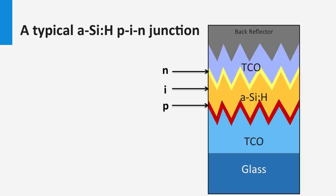A typical solar cell uses the superstrate configuration. When people talk about p-i-n junctions they refer to the sequence in which the silicon layers were deposited: first the p-layer, then the i-layer, then the n-layer. The front contact is a transparent conductive oxide, abbreviated as TCO. Typical TCO layers include fluorine-doped tin oxide, aluminum-doped zinc oxide, boron-doped zinc oxide, hydrogen-doped indium oxide, and ITO, which is tin-doped indium oxide. These films are processed using sputtering, low-pressure chemical vapor deposition, metal-organic chemical vapor deposition, or atmospheric-pressure chemical vapor deposition.